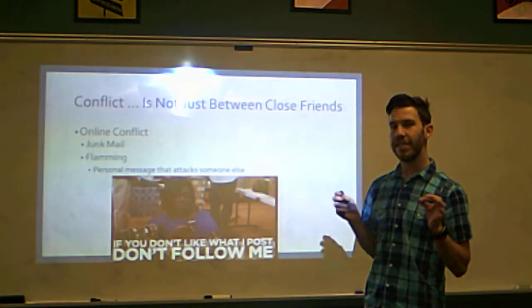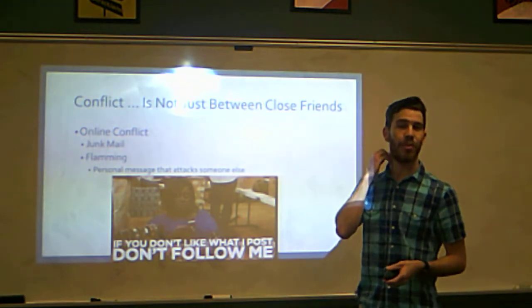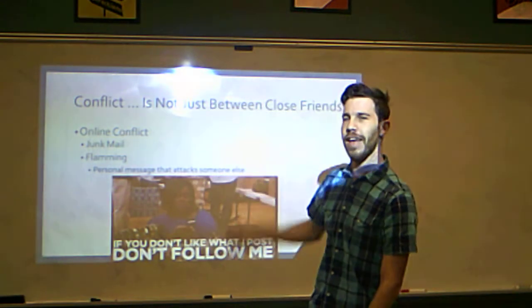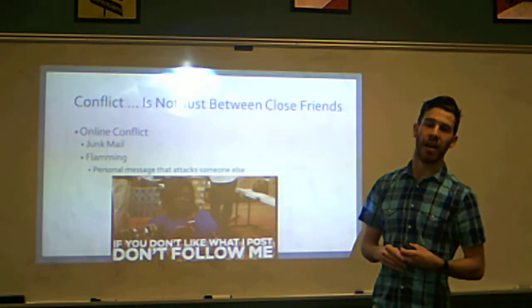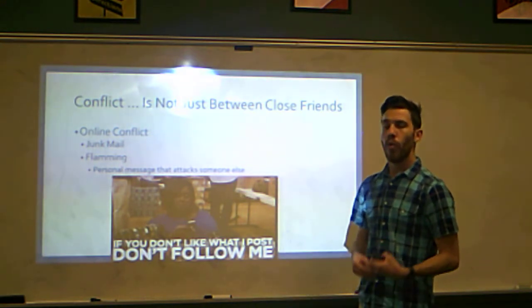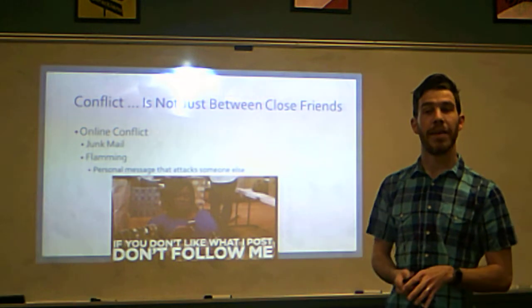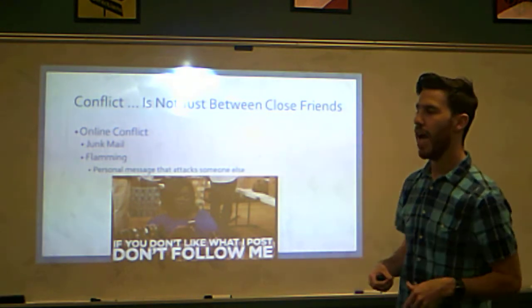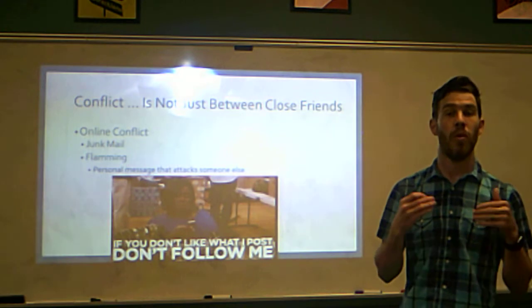Online conflict does occur, and this is called flaming. Flaming is when you personally attack someone through online messaging. Junk mail is a version of flaming. Politicians today fall into flaming — using Twitter and Instagram to attack other people. It's a style of conflict, just online. The only rebuttal is another tweet or post, and it goes back and forth. There's not as much of a full communication process because it's the fifth level of communication — mass media — which has little to no feedback.